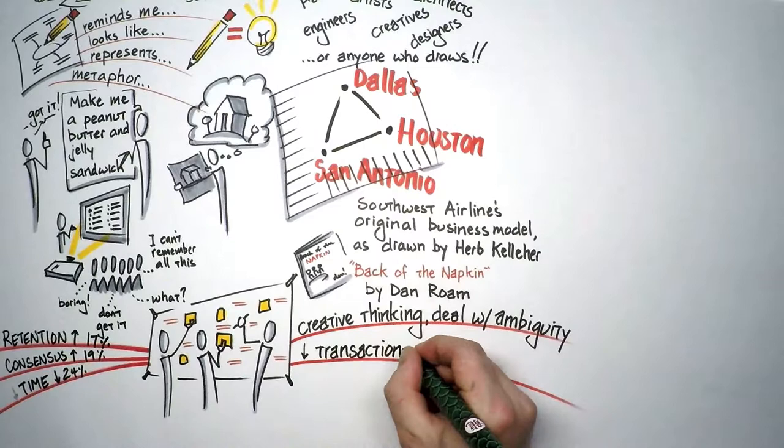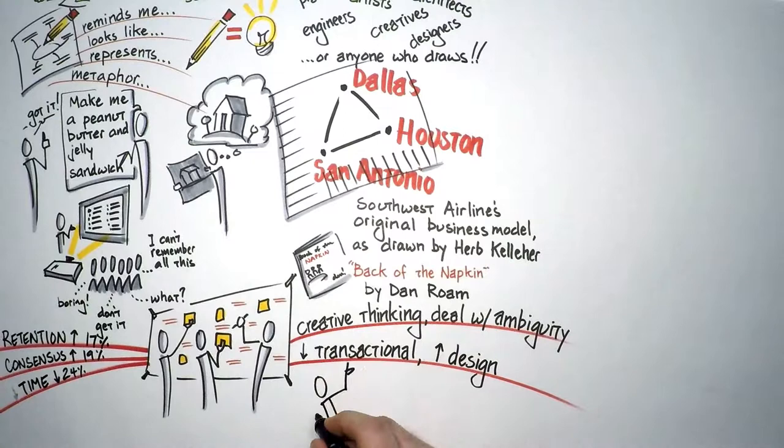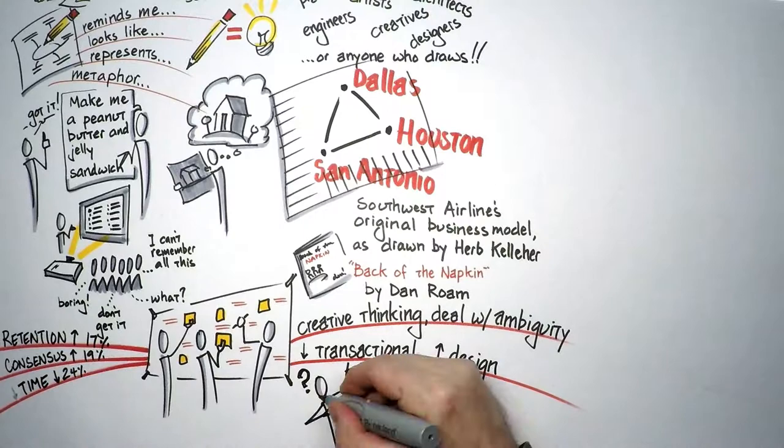The workplace is becoming less about transactions and more about design. And designing anything—whether it's a process, a product, a service, or a solution—without visuals is sort of like music without notes: just a lot of people talking. I want to take a minute and share some of those visual tools that can cut through ambiguity and design solutions.